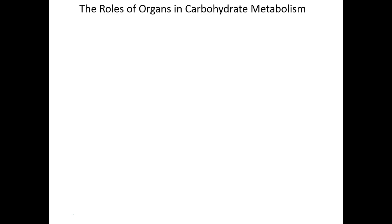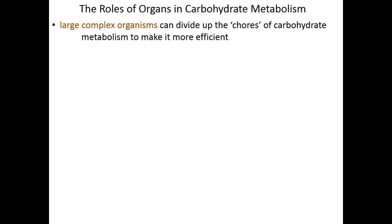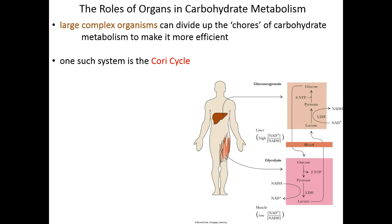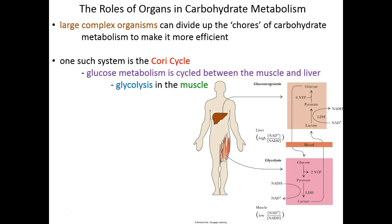The same kind of intercommunication happens at a larger scale — among different organs of the entire body. Large complex organisms don't only compartmentalize activities at the cellular level; we can compartmentalize activities at the organ system level, dividing the chores of carbohydrate metabolism among different organ systems to make it more efficient. One such system is called the Cori cycle — a cycle of metabolic intermediates between the liver and the muscle.